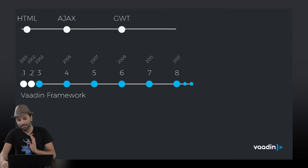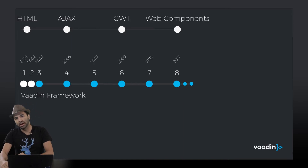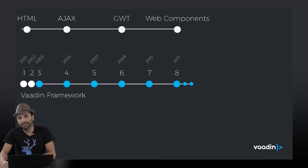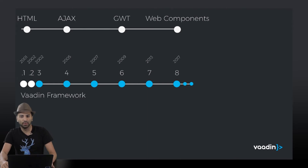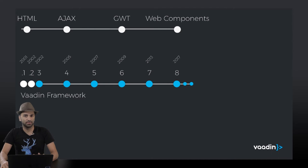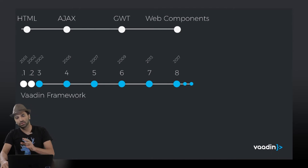The biggest thing that we have in framework version 8 is that we started to adopt web components. So you don't necessarily have to use JWT for UI components, but you can also use web components.